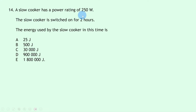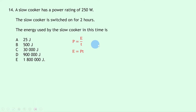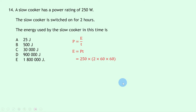Question 14: a slow cooker has a power rating of 250 watts and is switched on for two hours. Using E = PT = 250 × (2 × 60 × 60) = 250 × 7200 = 1,800,000 joules = 1.8 × 10⁶ joules, which is answer E.